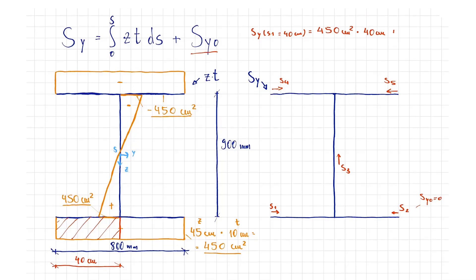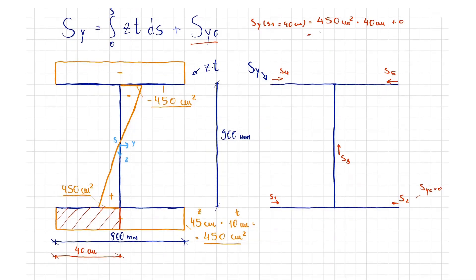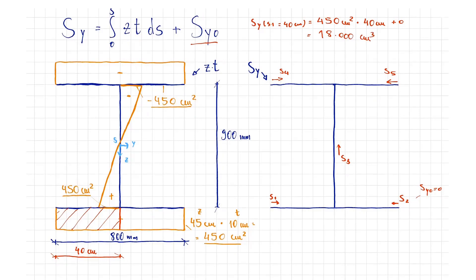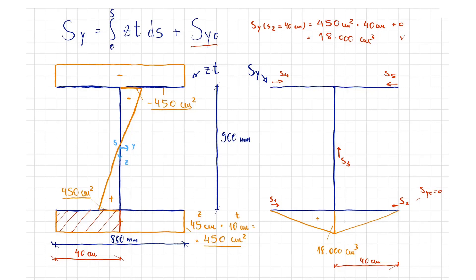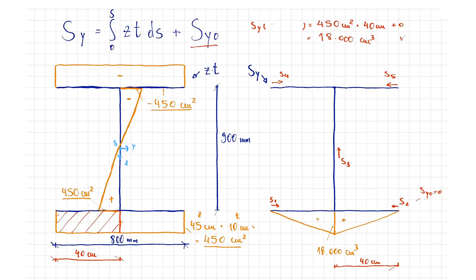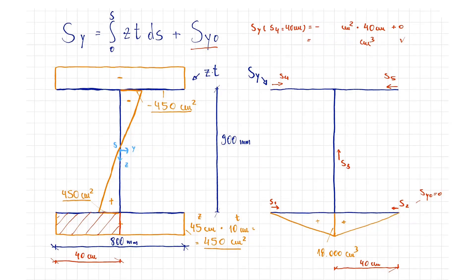This results in the value of the statical moment of 18,000 cubic centimeters, and the same is true for S2. The distributions are determined similarly in the upper flange. The difference above is the negative sign of the ordinate Z. This way, we have minus 18,000 cubic centimeters at the top.